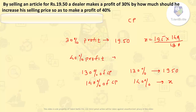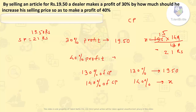The zeros cancel out, giving 1.5 × 14 = 21 rupees. So the new selling price should be 21 rupees. The previous selling price was 19.50 rupees, so that particular person has to increase the selling price by 1.5 rupees. The answer for this question is 1.5 rupees.